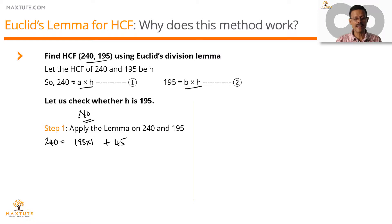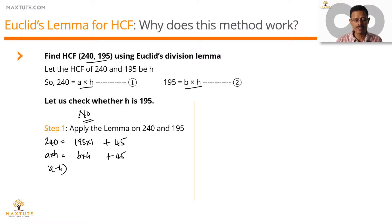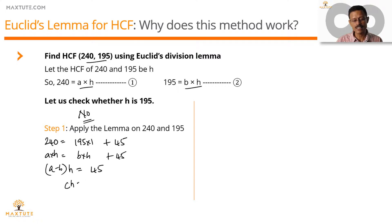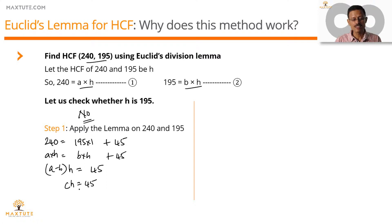We can write 240 as A·H from equation 1, and 195 as B·H from equation 2, giving us A·H = B·H × 1 + 45. Taking all H terms to one side: (A − B)·H = 45. Since A and B are integers, A − B is also an integer. For convenience, let's write it as C·H = 45. We have established that this 45 is a multiple of the HCF. That is inference number one.